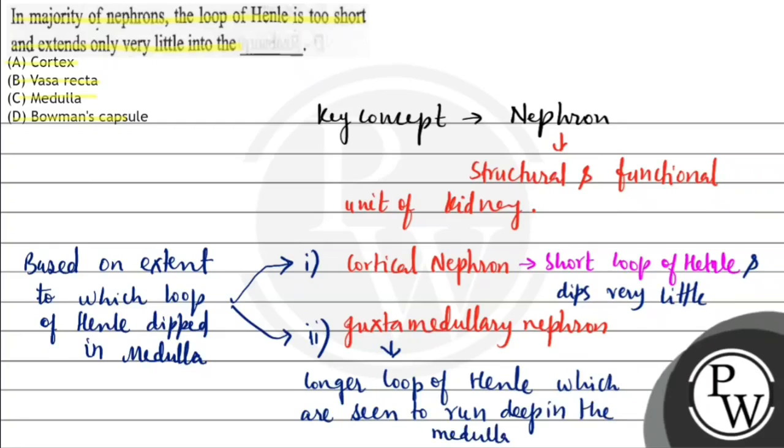So according to the question, in the majority of nephrons the loop of Henle is too short and extends only very little in the... so where?